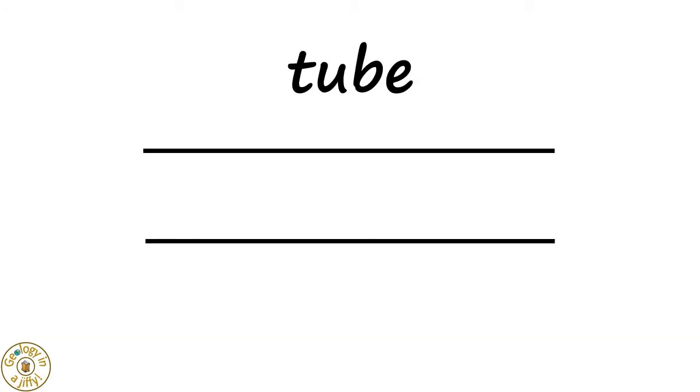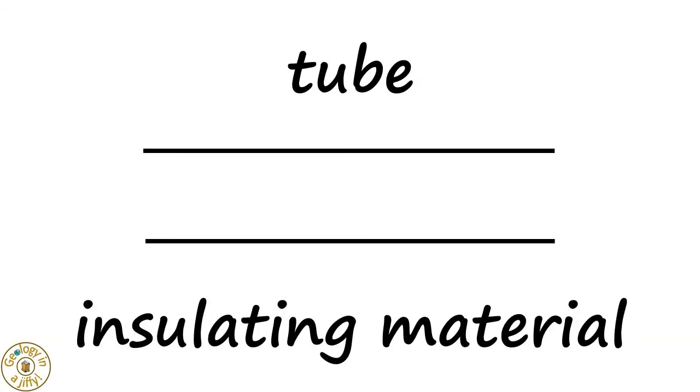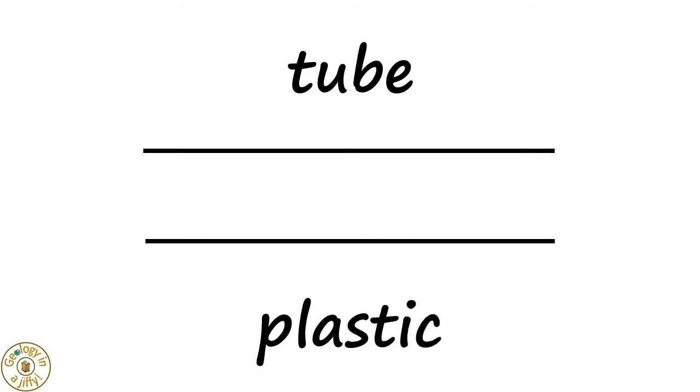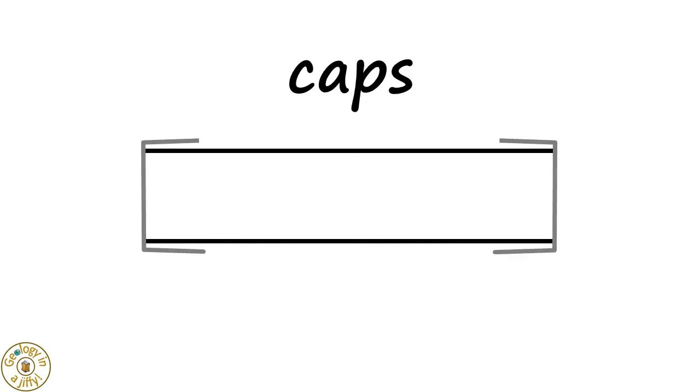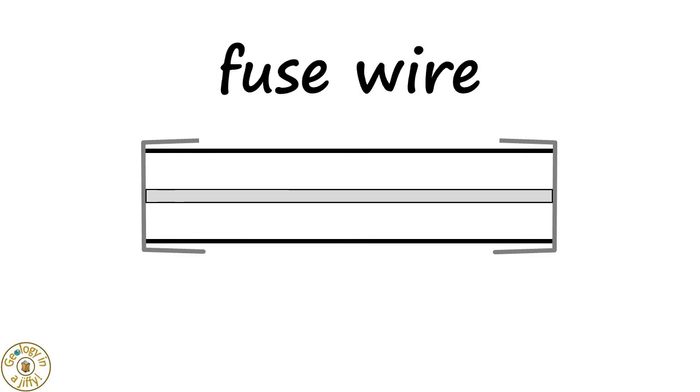Fuses consist of a tube made of an insulating material such as glass or plastic with caps at the ends, these made of a metal alloy. Inside the tube joining the caps together is fuse wire, usually made out of the alloy nichrome.